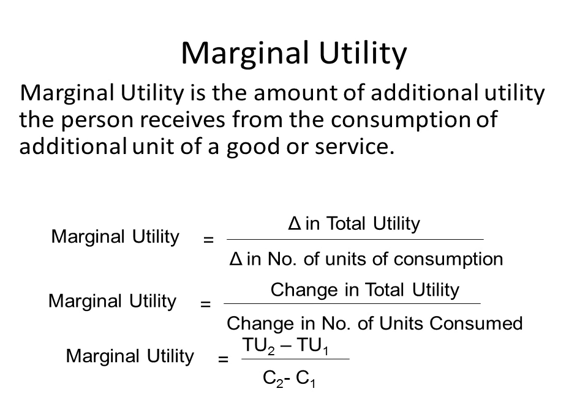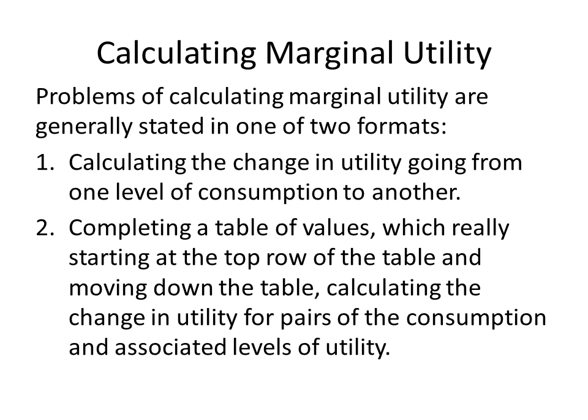The mathematical way of calculating marginal utility requires two levels of utility, T1 and T2, and two levels of consumption, C1 and C2. Problems can take two formats: one is calculating the change in utility from one level of consumption to another; or, more likely in homework and tests, completing a table of values — calculating the change in utility for pairs of consumption and associated utility levels.